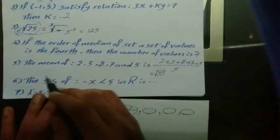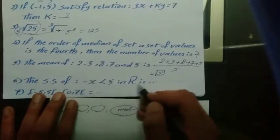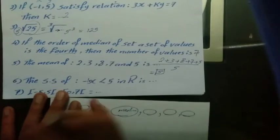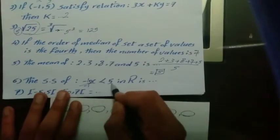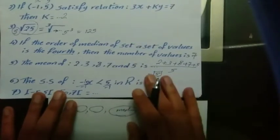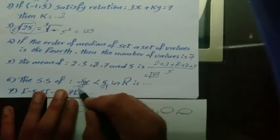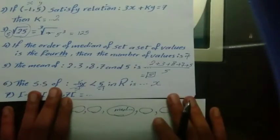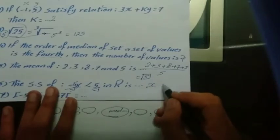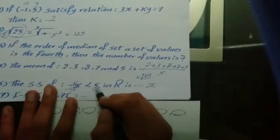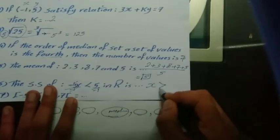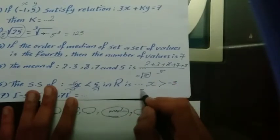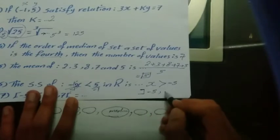Question 6: The solution set of negative x less than 5 in R. Negative x means negative 1 multiplied by x. Dividing by negative 1 on each side changes the direction of the inequality, so x less than 5 becomes x greater than negative 5. The solution set is the open interval from negative 5 to infinity.